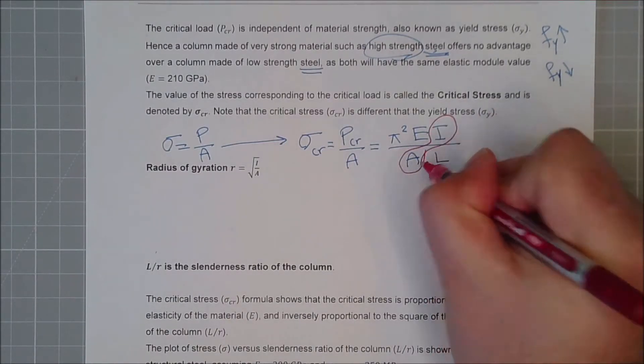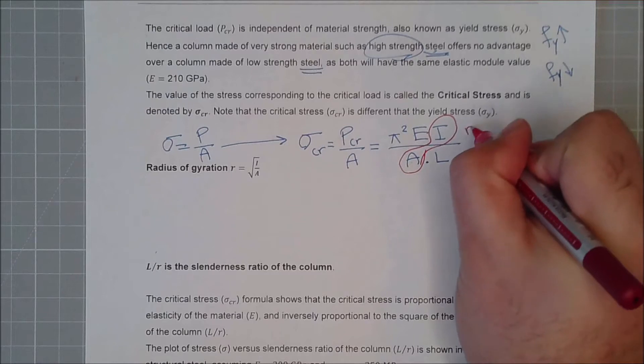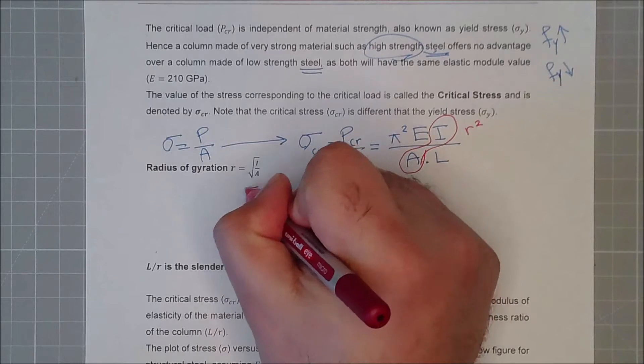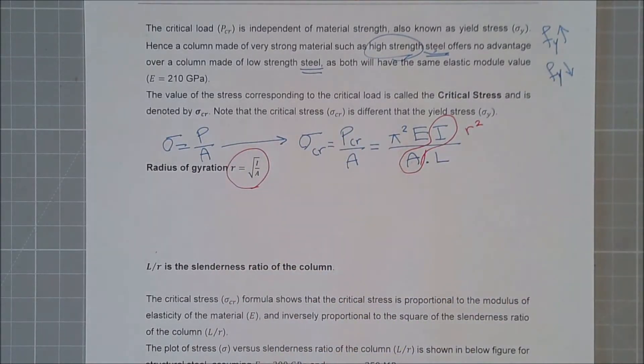i over A is the radius of gyration to the power of 2. So this is the radius of gyration.